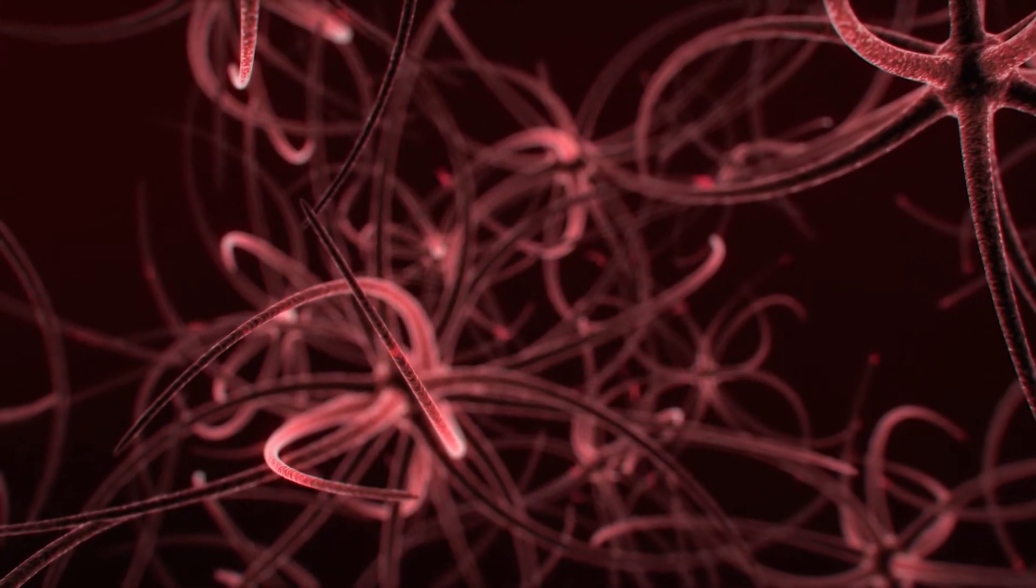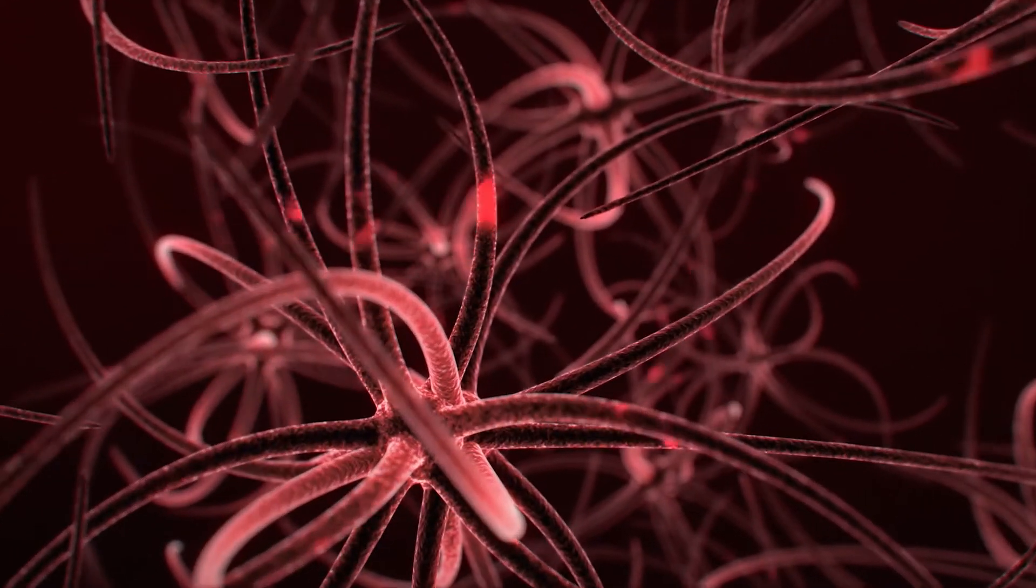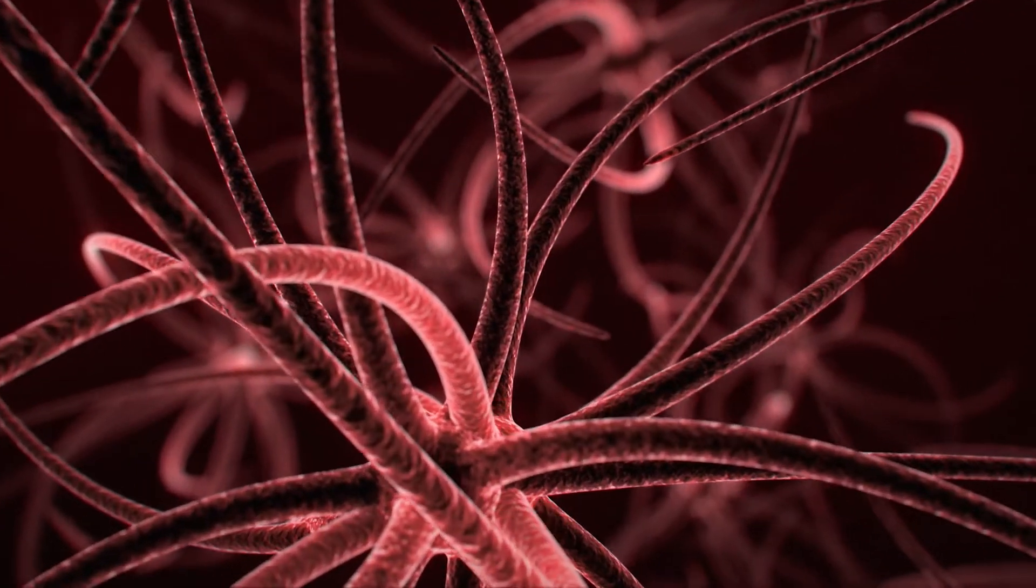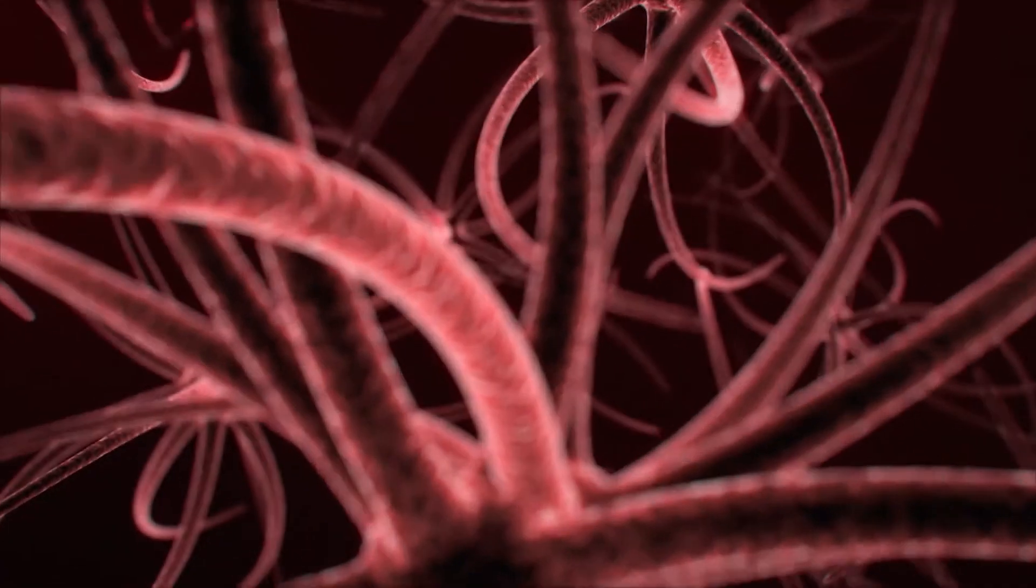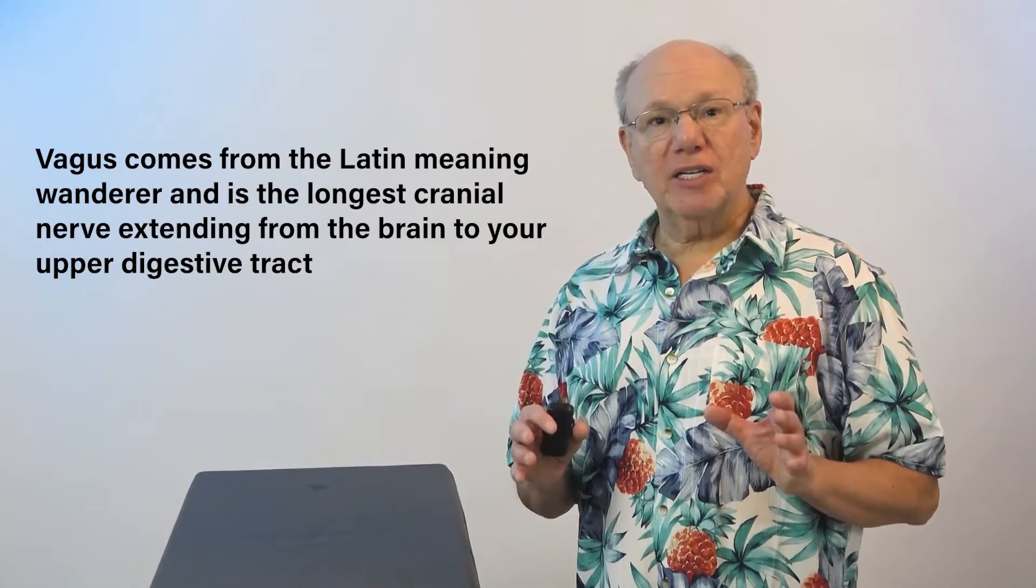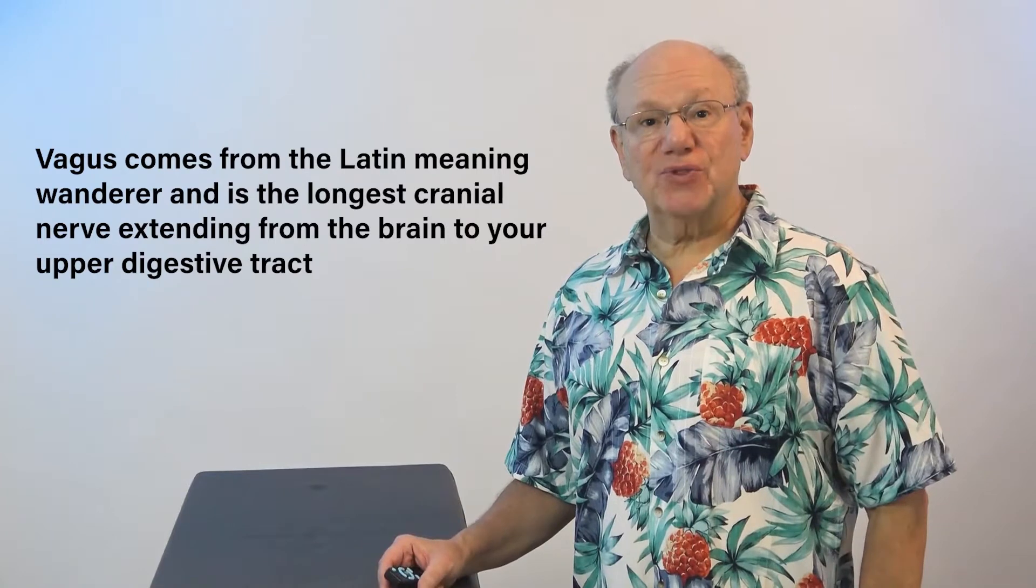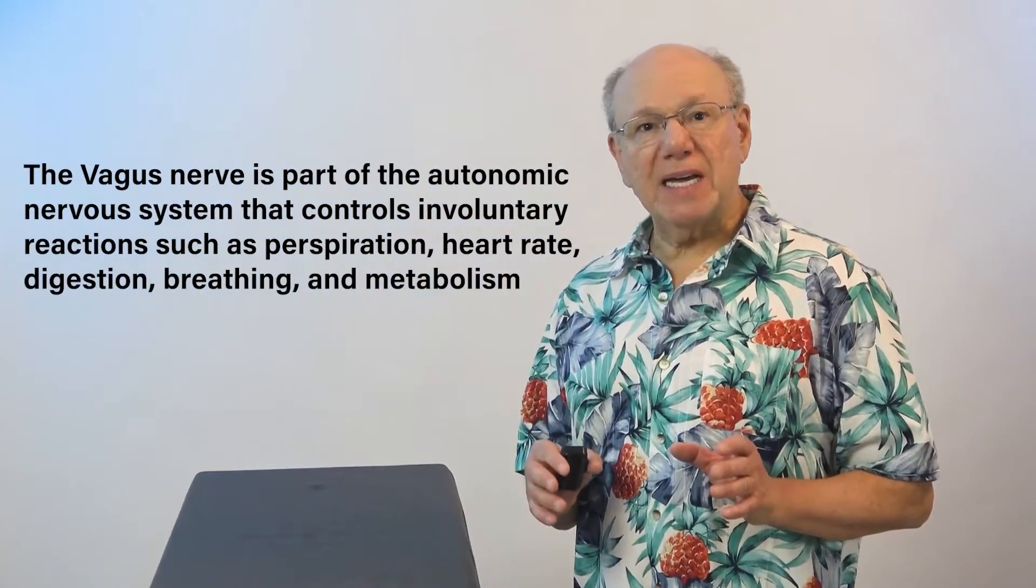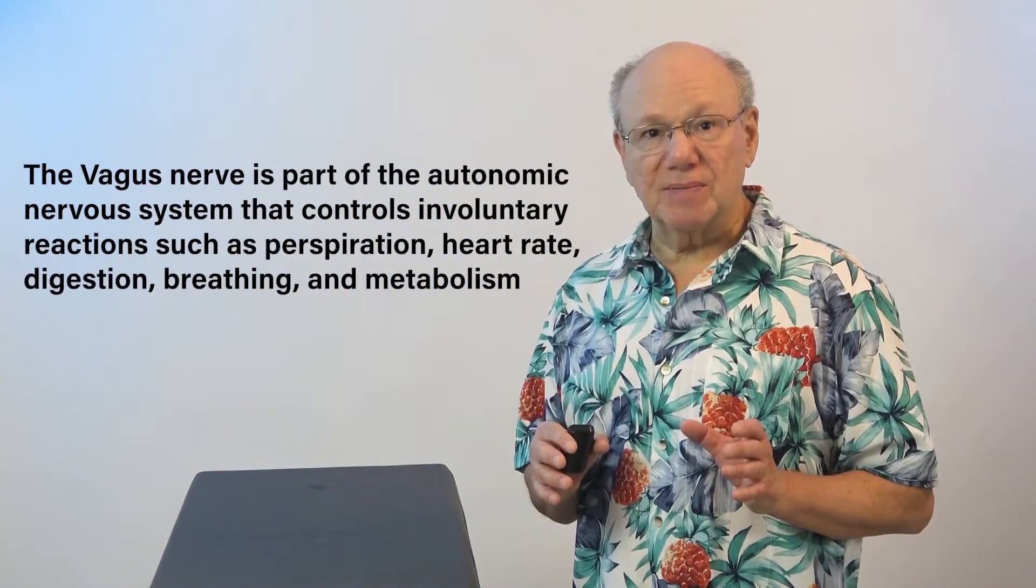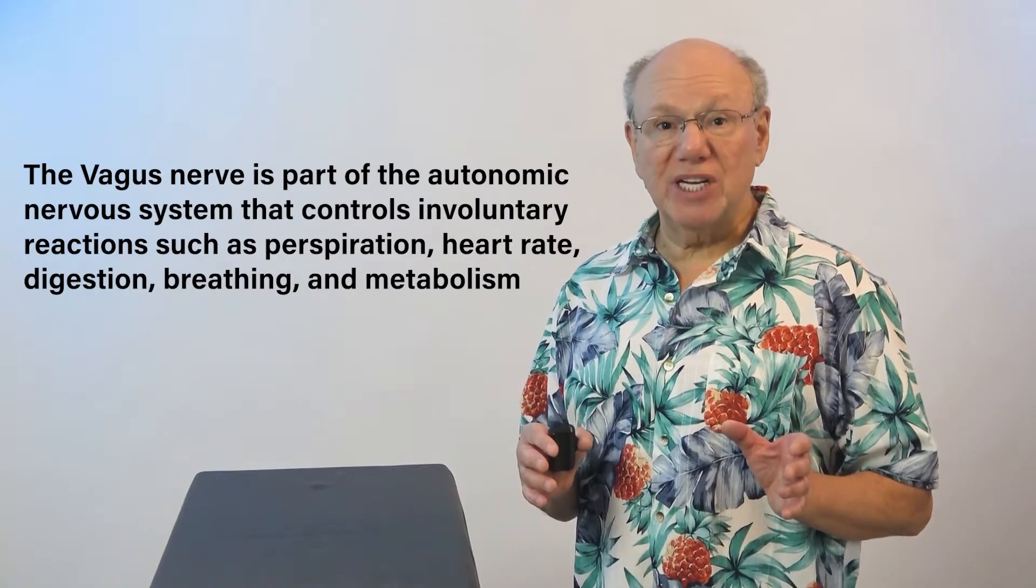While most nerves in the body reach the brain via the spinal cord, the vagus nerve is one of a small group of nerves called cranial nerves that connect to the brain directly. Vagus comes from the Latin meaning wanderer and is the longest cranial nerve extending from the brain to your upper digestive tract.